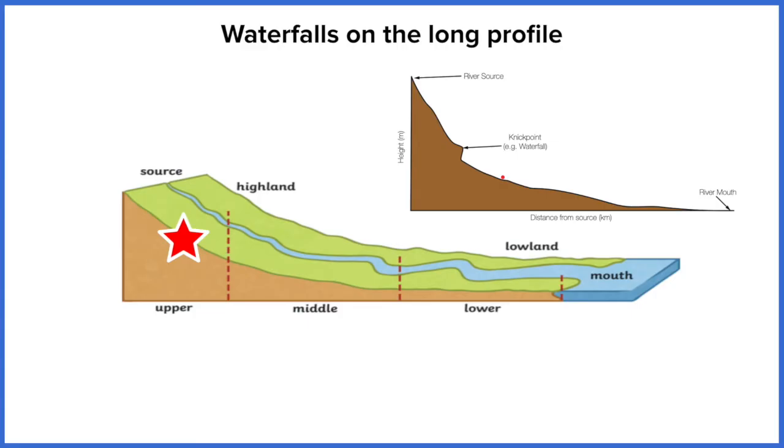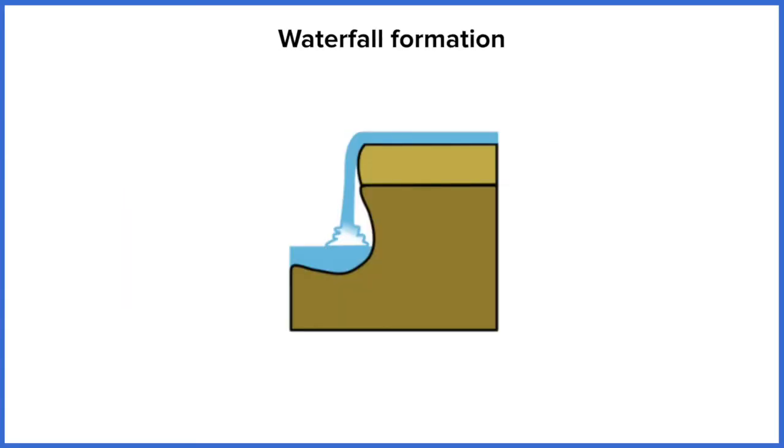Let's have a look at how this actually forms though. We've got a couple of cross sections of a waterfall here and you'll notice first off that there are two different shades of rock. We've got a lighter shade at the top and a darker shade at the bottom. The lighter shade at the top is a harder rock. That means it's more resistant to erosion and it's not going to erode as quickly whereas the softer rock will.